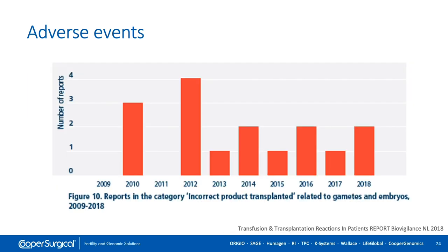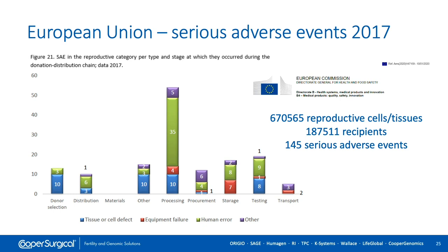Looking at the Netherlands, which publishes excellent data on errors and adverse events, there are typically a couple of events annually in which the wrong gametes or embryos are transferred into a patient. There is no reason to assume systems elsewhere are any less robust, so we must assume these events happen on a relatively uncommon but regular basis. Looking at collated EU data, there were 145 serious adverse events involving reproductive cells or tissues reported in 2017, occurring primarily during processing, testing or storage, mainly due to human error and occasionally tissue or cell defects.